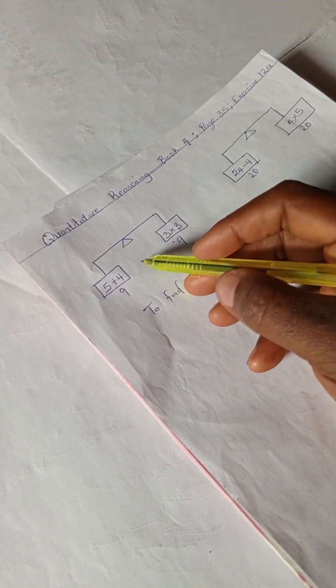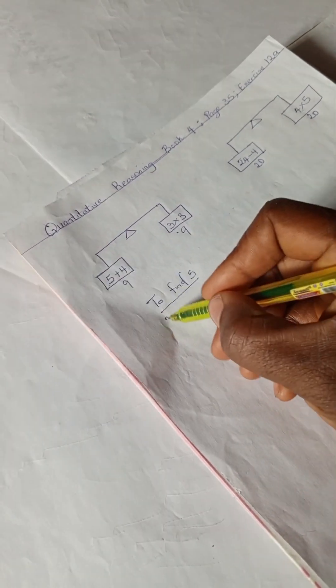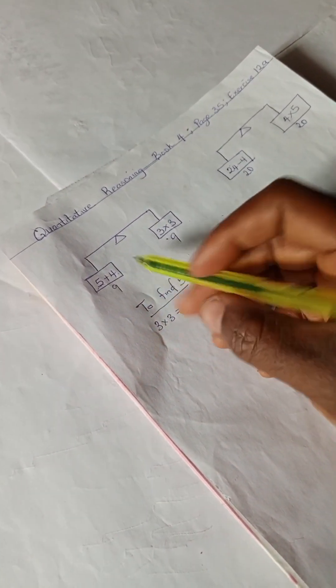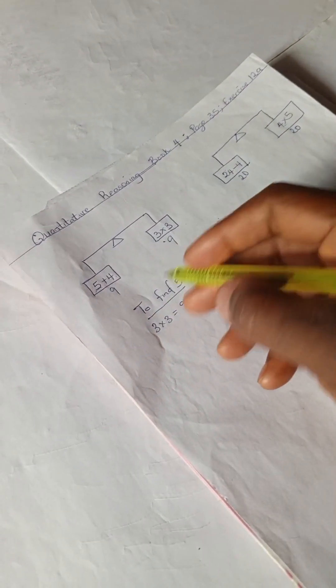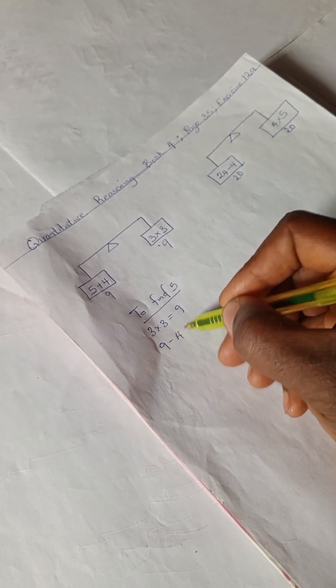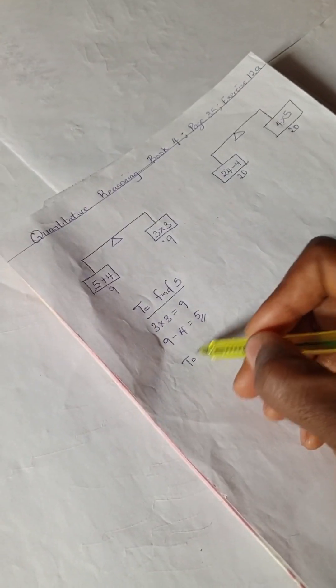So to find 5, assuming 5 isn't given, you're going to have 3 times 3 which is already 9, and since there's an addition here you're going to subtract 4 from 9. So we have 9 minus 4 is 5. Okay, so let's try to find, let's do the same thing for 4.